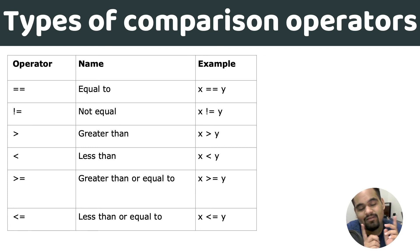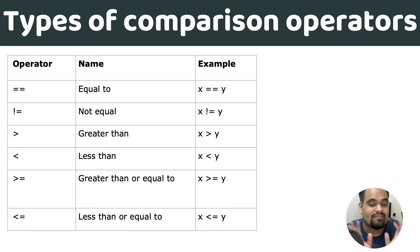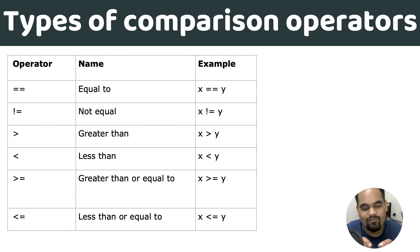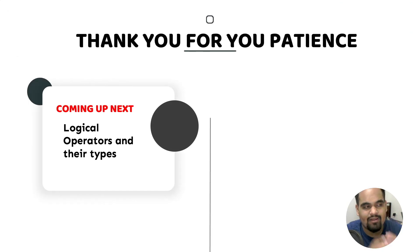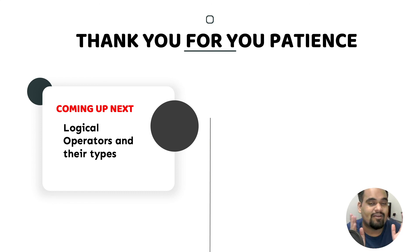Less-than-or-equal-to (<=): if x is less than or equal to y, you get 1; if any of these conditions are not met, you get 0. Very simple, very handy. I hope you understood this part. In the next video we'll talk about logical operators and their types. I'll see you all in the next one — peace!